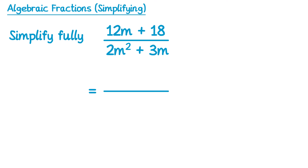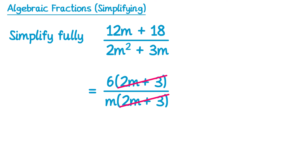If we factorise the top, this will be a single bracket factorisation — there's a common factor of 6. Inside the bracket to get 12m we would need 2m, and to get to 18 from 6 we need to multiply by 3. On the bottom it's also a single bracket factorisation, this time we can factorise out the m. To get 2m squared from m we'd need to multiply by 2m, and to get 3m from m we need to multiply by 3. You can now see that we have a 2m plus 3 on the top and on the bottom. These are common factors so we can cancel them, and we're just left with 6 on the top and m on the bottom, so this one would simplify to 6 over m.